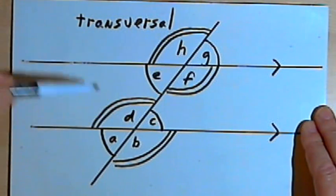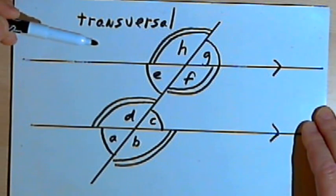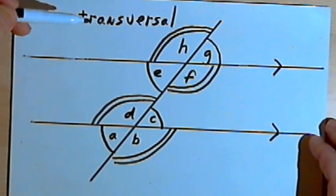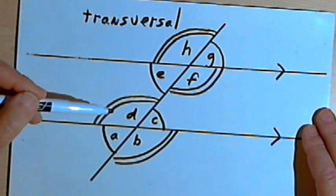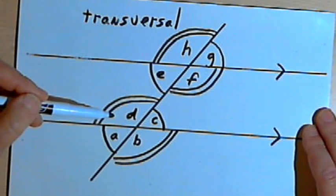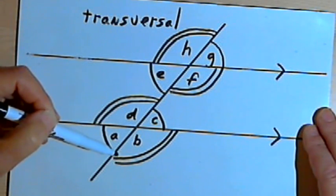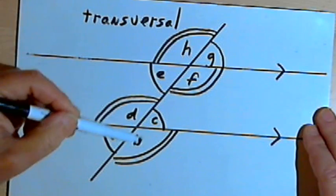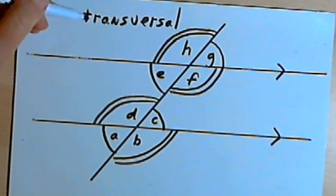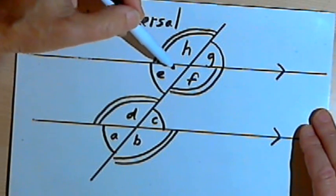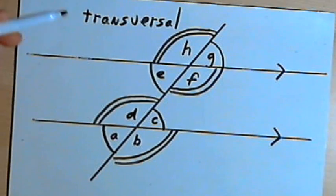So once you've got a pair of parallel lines cut by a transversal, all of the corresponding angles are equal to each other, like C and G. All of the alternate interior angles are equal to each other, like C and E. And all of the alternate exterior angles are equal to each other, like B and H. That's basically the relationships among the various angles formed by parallel lines and a transversal. Take care — I'll see you next time.